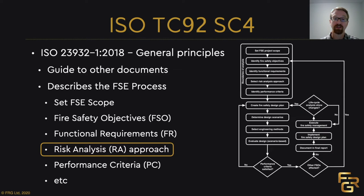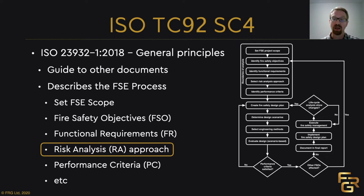ISO 23932 part 1, from 2018, is called General Principles. This document is basically a guide to other documents — the go-to guide for knowing which other documents to use in different parts of a fire safety engineering analysis or fire safety management. It describes the fire safety engineering process through a flowchart. You start off by setting a fire safety engineering scope, since the document is focused on how you do the design of a new building and consider fire safety aspects.